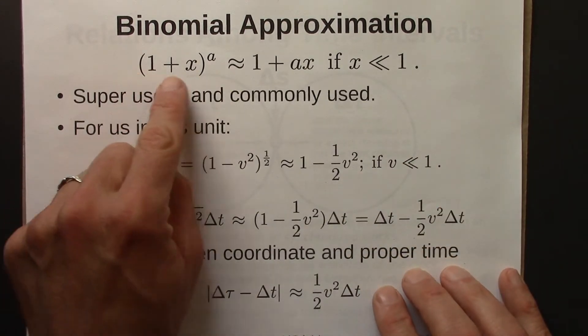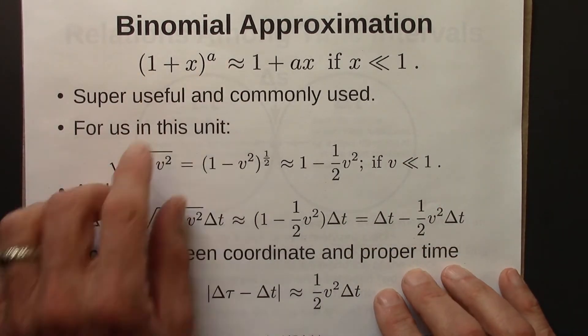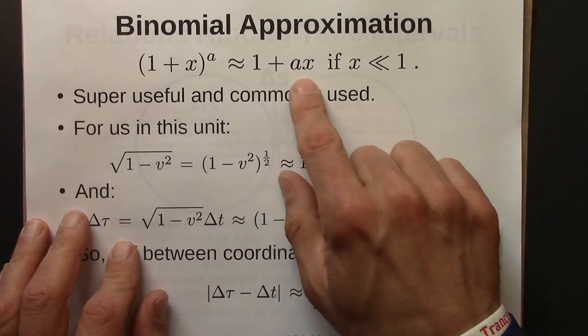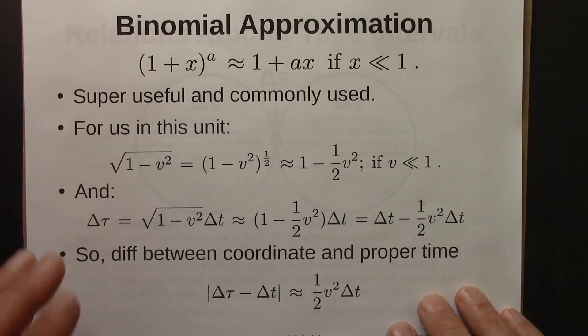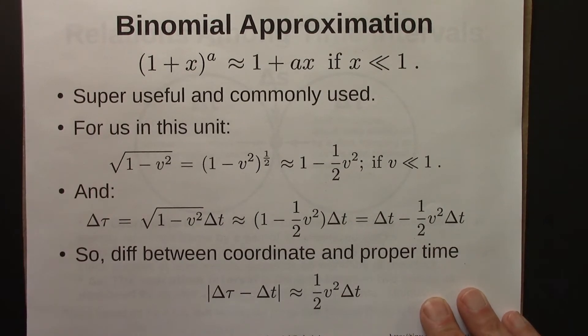That says if we have an expression like this, 1 plus x to the a, that's approximately equal to 1 plus ax, as long as x is much less than 1. So again, this is super useful, very commonly used in physics and elsewhere.